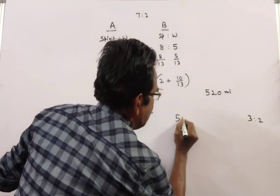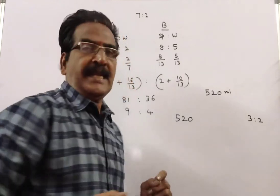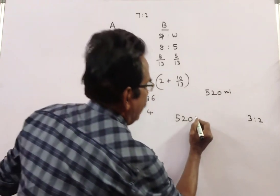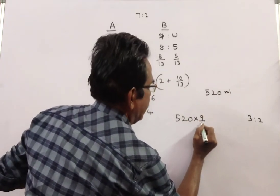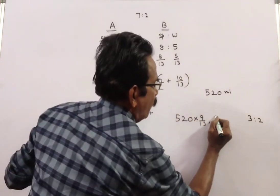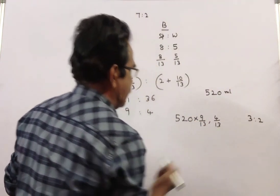Let us see how many ml of spirit and water are there in the 520 ml. 520 into 9 by 13 is spirit, 4 by 13 is water.